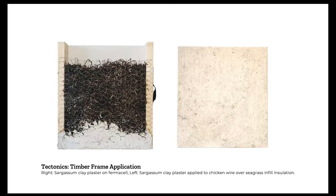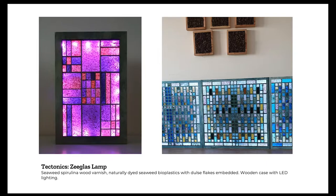Clay plaster not only regulates the seaweed inside by sucking out excess moisture — it also helps regulate the humidity and VOCs in the rooms we are in. So by using plaster over potentially plastic paints, we could actually create healthier building interiors.